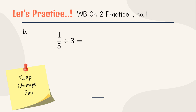Look at B: one per five divided by three. Keep first. Then change that division symbol into multiplication. Flip: that three flips into one per three. The answer: one times one equals one, and five times three equals fifteen. So the answer is one per fifteen.